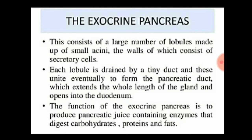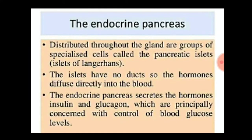Now we will discuss the endocrine pancreas. Distributed throughout the gland are groups of specialized cells called the pancreatic islets, also known as the islets of Langerhans. The islets have no ducts, so the hormones diffuse directly into the blood. The endocrine pancreas secretes the hormones insulin and glucagon, which are principally concerned with the control of blood glucose level.